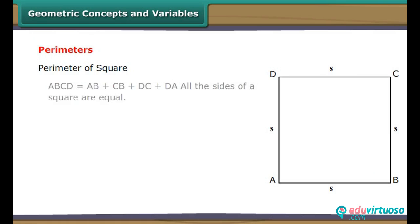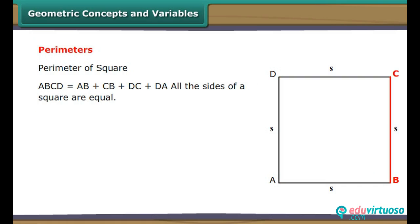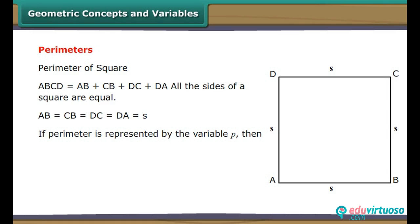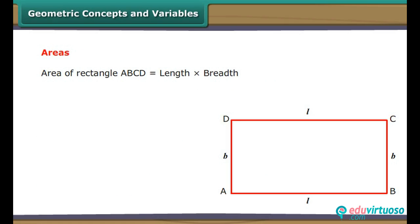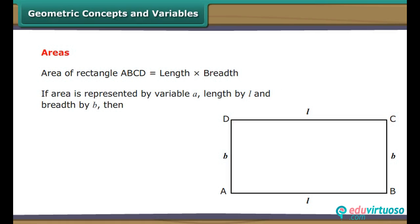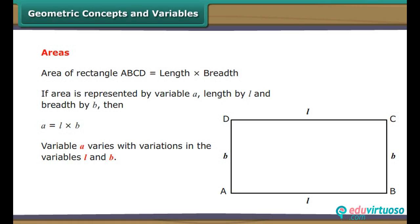For a square ABCD, all sides are equal: AB equals CB equals DC equals DA equals S. If perimeter is represented by P, then P equals S plus S plus S plus S, which equals 4S. Variable P varies with variations in variable S. Area of rectangle ABCD equals length into breadth. If area is represented by variable A, length by L, and breadth by B, then A equals L into B. Variable A varies with variations in variables L and B.